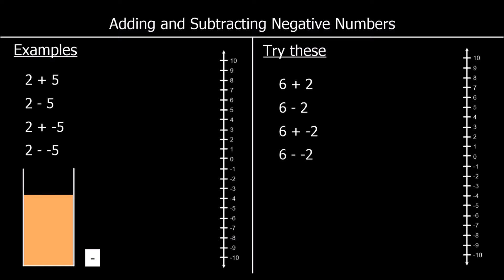Let's look at each of these on the number line. For the first one, 2 plus 5, the first number is our starting point, so we start at 2. A plus means we go up the number line; a minus means we go down. The last number is how many spaces. So we're starting at 2, going up the number line by 5 spaces.